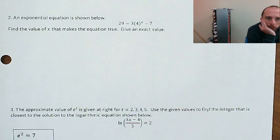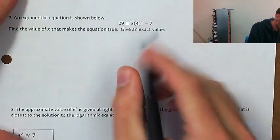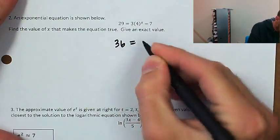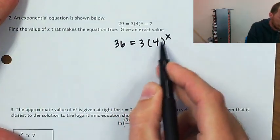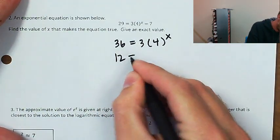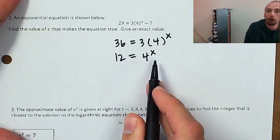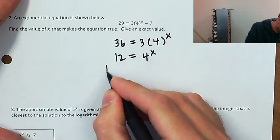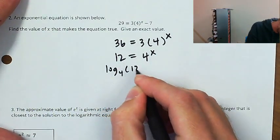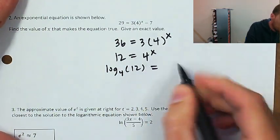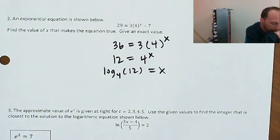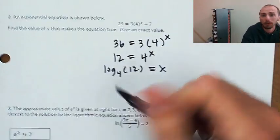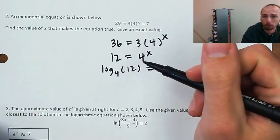Next exponential equation: we need to isolate the exponential. First I'm going to add 7 to both sides — that gives 36 equals 3 times 4 to the x. Then divide by 3 to isolate the exponential. Take a log with base 4 of both sides. The log base 4 of 4 to the x is just x. The exact value is a log — log base 4 of 12. There's nothing more you can do with this besides saying natural log of 12 divided by natural log of 4 using change of base, but that's as far as we can go.